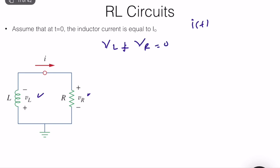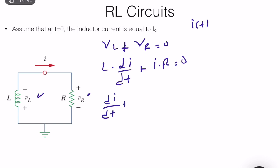VL is equal to L·di/dt, where i is the inductor current, and VR = i·R. Substituting into the KVL equation gives the differential equation: di/dt + (R/L)·i = 0.